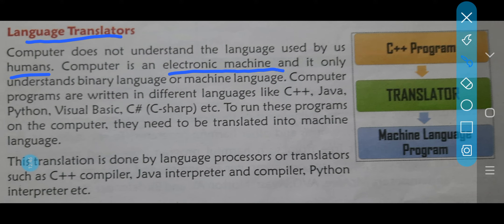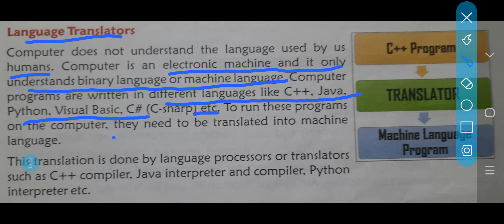Computer is completely dependent on humans. Human jo hai, jaisi hi aap computer ke language mein commands dete hain, computer samajh jata hai and it performs all the tasks given to it. Now computer is an electronic machine and it only understands binary language or machine language. Woh sirf dho hi language samajhta hai — ek hai binary language, aur other is machine language. Now computer programs are written in different languages like C++, Java, Python, Visual Basic, C, C#, etc. — bahut saari different varieties of languages. To run these programs on the computer, they need to be translated into machine language.